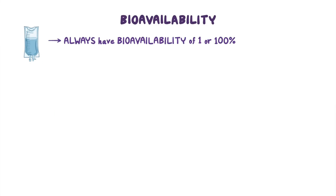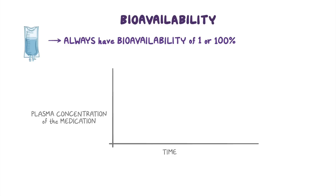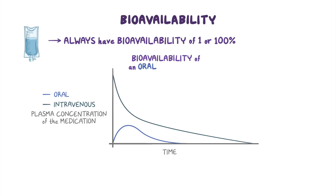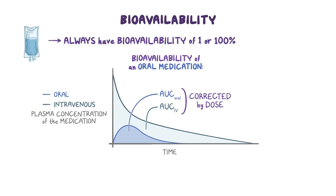Medications administered intravenously will always have a bioavailability of 1 or 100%. We can plot this into a graph showing the relationship between time on the x-axis and the plasma concentration of the medication on the y-axis after both oral and intravenous administration. Bioavailability of an oral medication can be estimated by dividing the area under curve, or AUC, of the oral form by the AUC of the intravenous form, with both AUCs corrected by the dose D. So bioavailability F equals AUC oral times D intravenous over AUC intravenous times D oral.